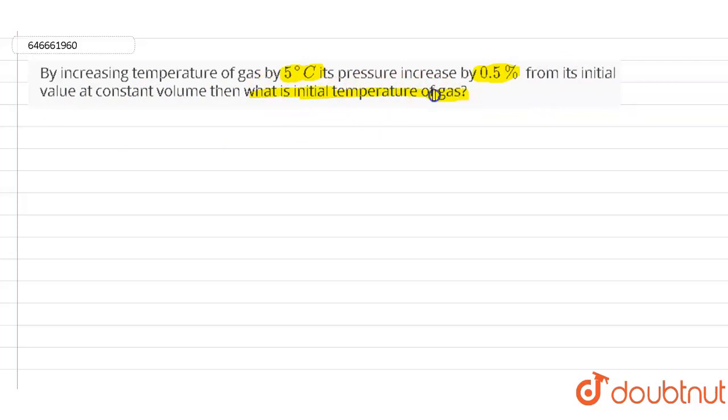So here we need to find out the initial temperature of the gas. According to this particular question, because at constant volume the value of the temperature is proportional to the value of P.